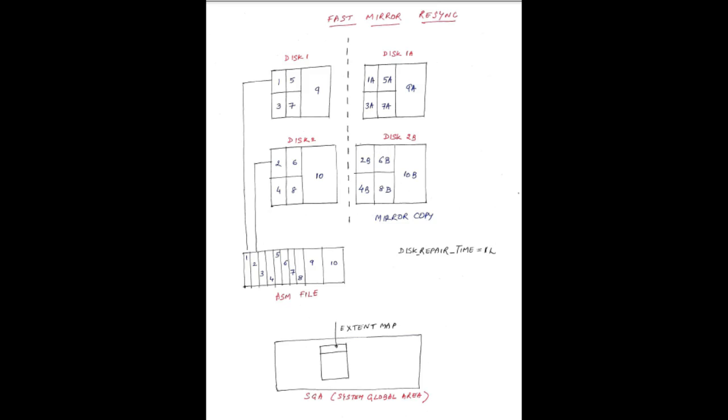Imagine the ASM file is increasing in size as data grows in the database. We have a disk group DG with disk 1 and disk 2. When you create a tablespace, an ASM file is created. It gets extent 1 from disk 1, extent 2 from disk 2, extent 3 from disk 1, extent 4 from disk 2, extent 5 from disk 1, and extent 6 from disk 2, and so on.